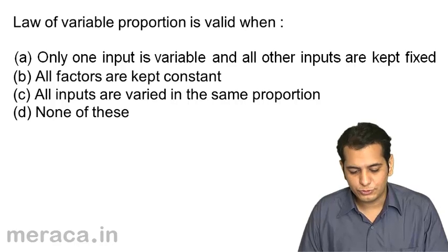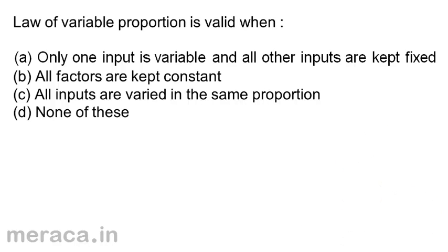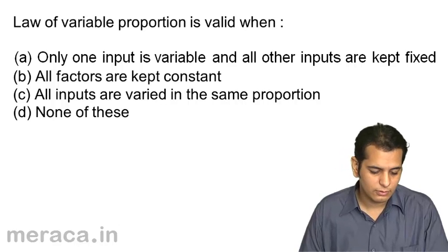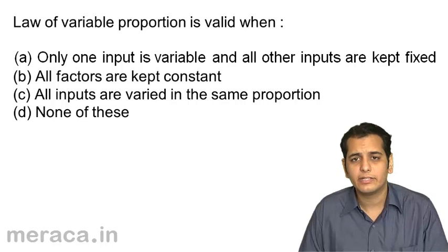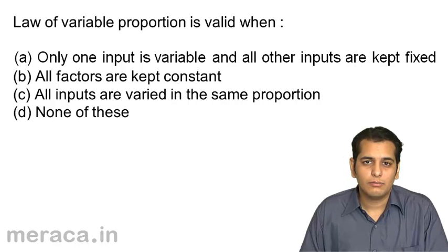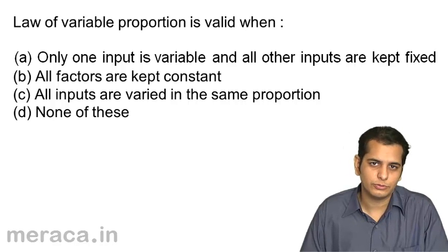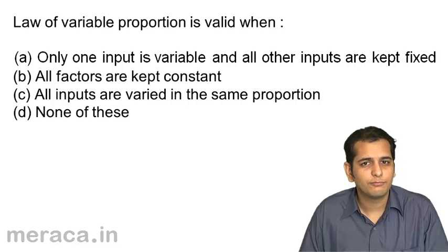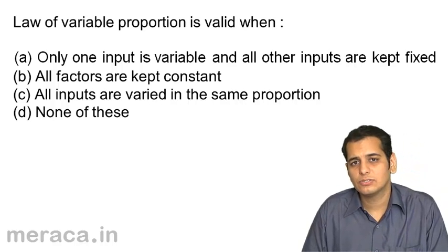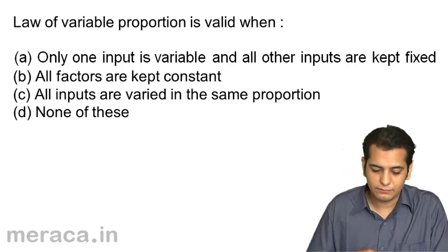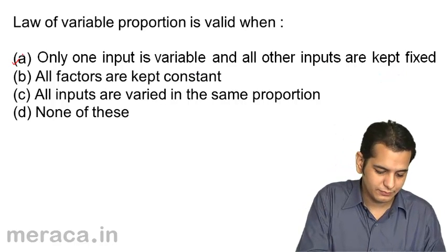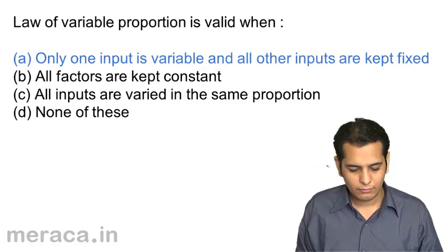Law of variable proportions is valid when: a) only one input is variable and all other inputs are kept fixed, b) all factors are kept constant, c) all inputs are varied in the same proportion, or d) none of the above. This is one of the most important assumptions of the law of proportion. It operates in the short run, where only one factor is variable and all other factors are fixed. The answer is only one input is variable and all other inputs are fixed.